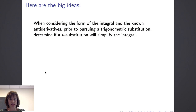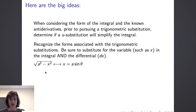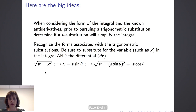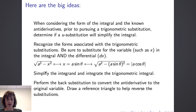Let's summarize the big ideas. When considering an integral, before pursuing trig substitution, determine if a u substitution would simplify it. Recognize forms associated with trig substitutions — when you see the square root of a squared minus x squared, use x equals a sine of theta. When making the substitution, replace every x in the integral and substitute the differential dx. The square root of a squared minus a sine of theta quantity squared equals the absolute value of a cosine of theta. Finally, simplify the integrand, integrate the trig integral, perform back substitution using a reference triangle to convert back to the original variable. And always have fun.